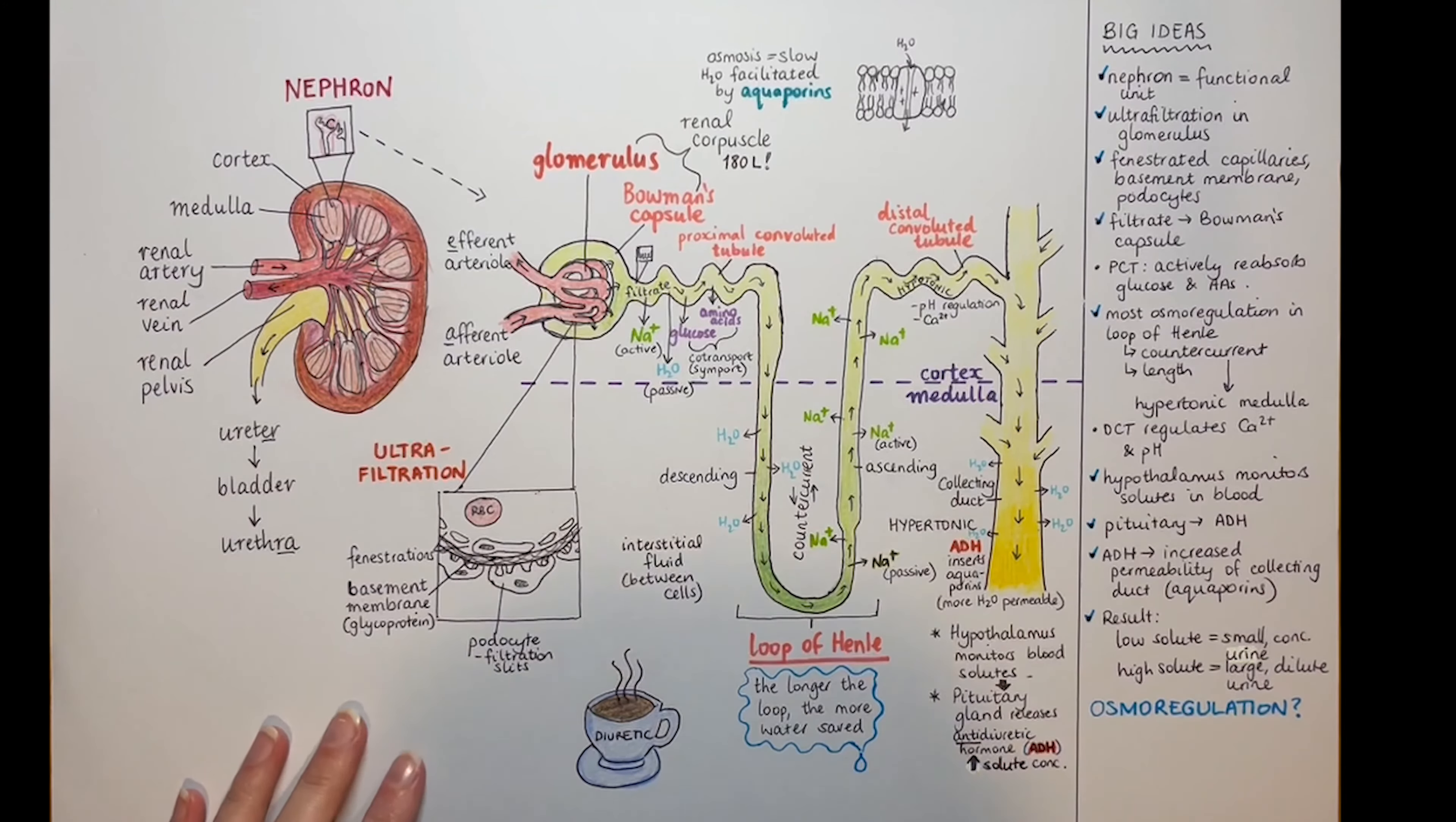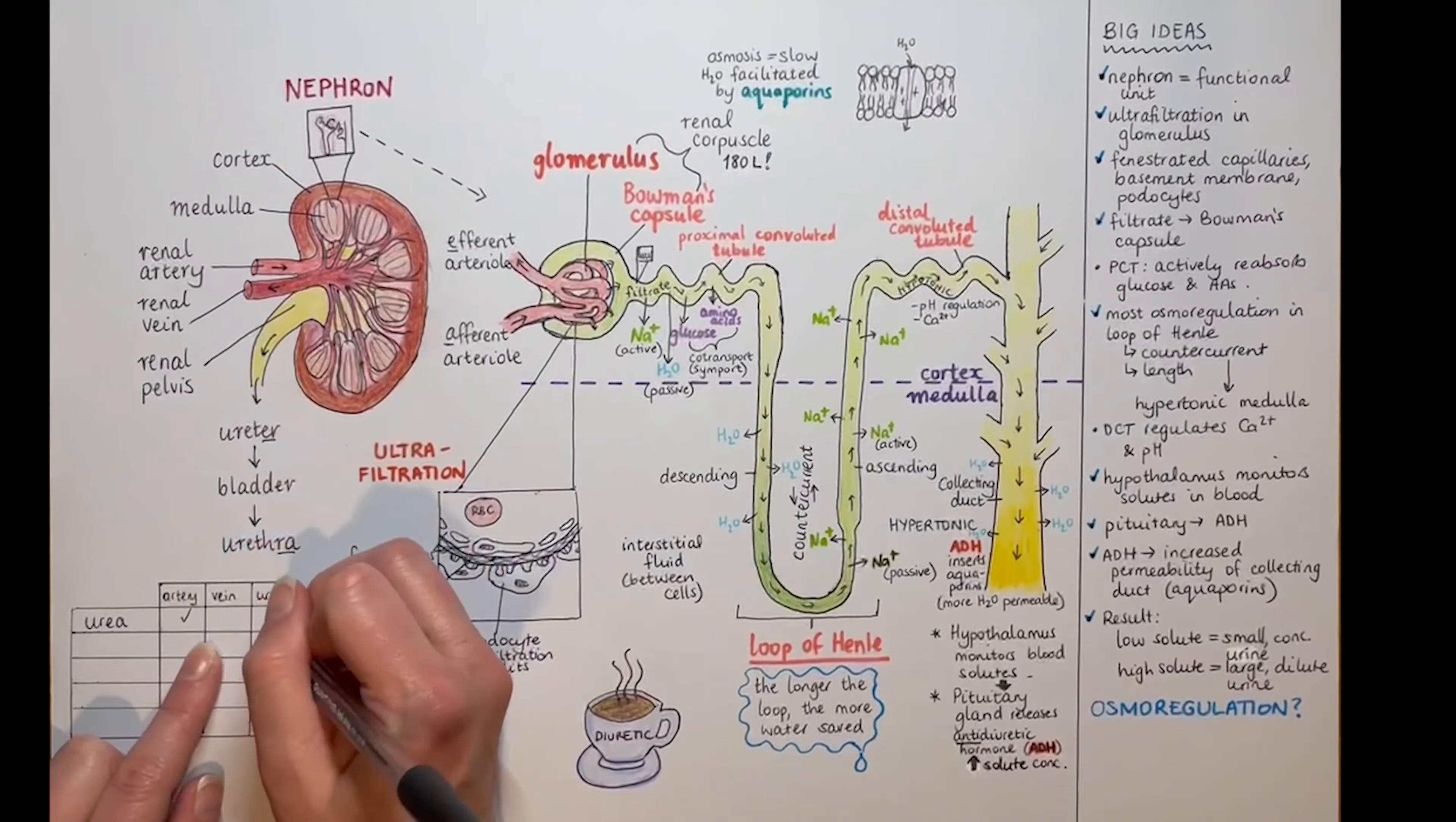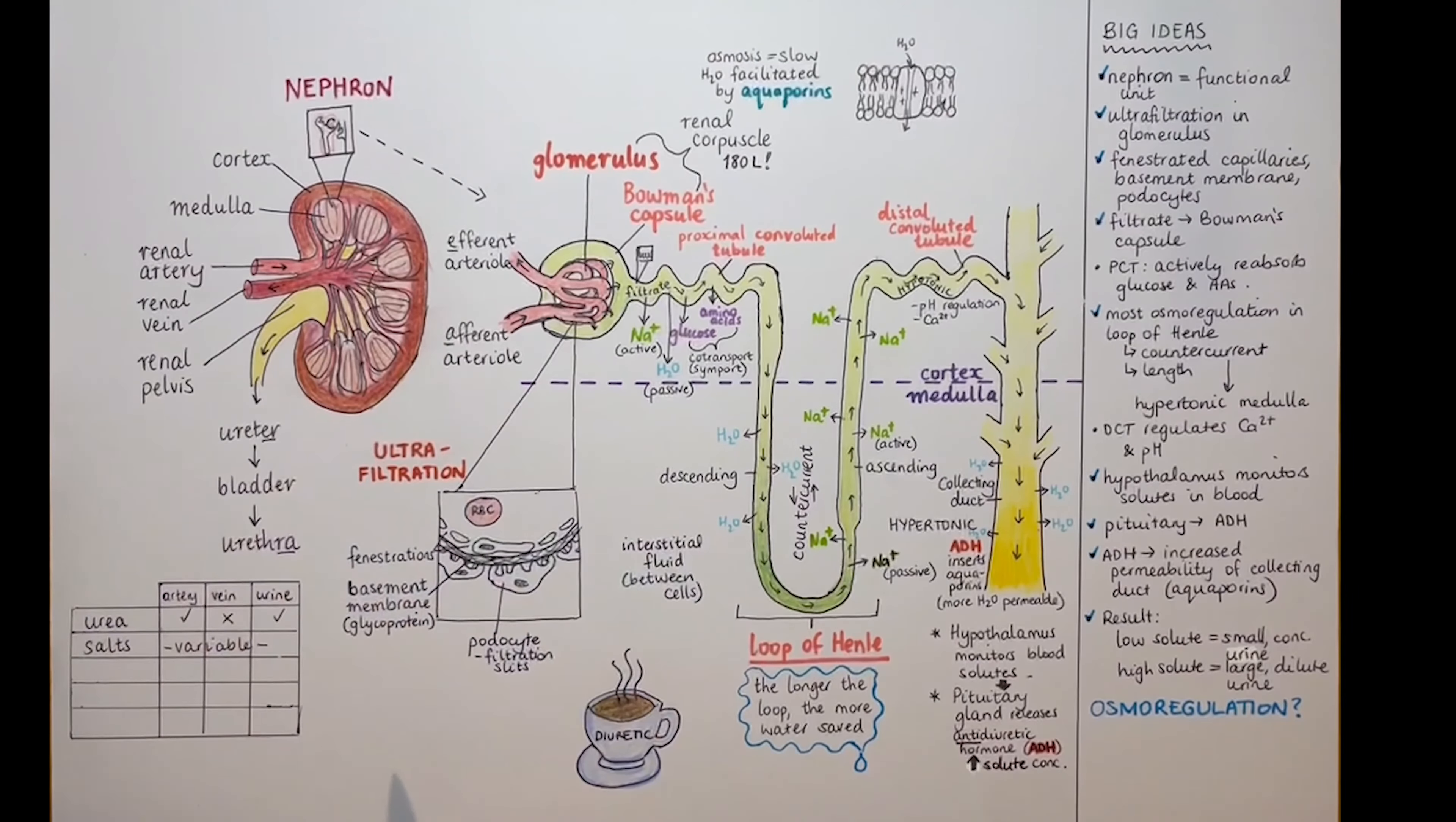What else? Let's see. An exam could get you to compare the composition of the renal artery, vein, and urine. So let's put that in a table. This might include the waste product urea from the liver, which is the nitrogenous waste the kidneys remove. It's present in the artery, not much in the vein, and mostly excreted in the urine. The salts we've just seen are variable depending on whether they're concentrated in the blood or not, so it's a bit hard to predict. They'll be more or less the same. The same is true for water.